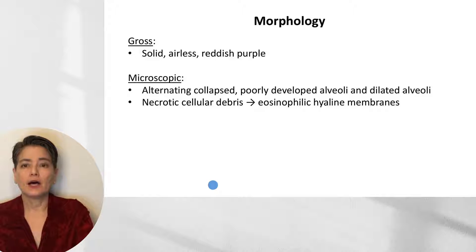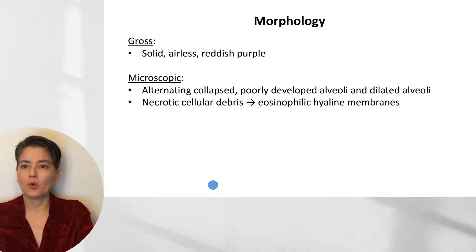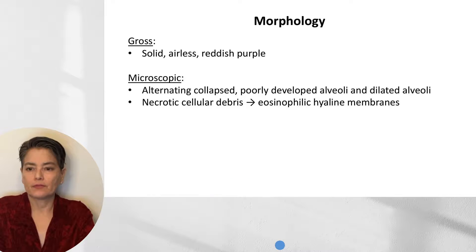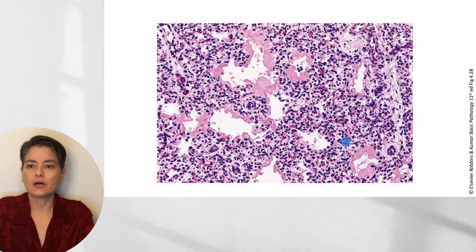Morphologically, grossly the lungs will be solid, airless, and reddish-purple — quite heavy with liquid. Microscopically, we see areas of collapsed, poorly developed alveoli as well as dilated alveoli, and necrotic cellular debris that in some areas forms bright pink hyaline membranes. In a lung section with neonatal RDS, you can see collapsed areas of atelectasis with immature lung, and other areas of dilated alveoli with thick hyaline membranes.